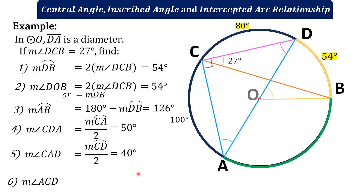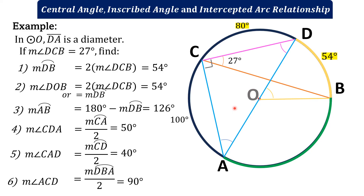Last one: find the measure of angle ACD. Angle ACD is inscribed in arc ACD, which is a semicircle. Therefore, angle ACD is a right angle, equivalent to 90 degrees.